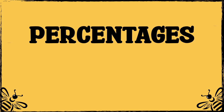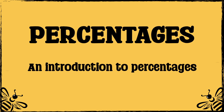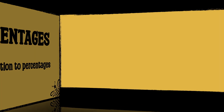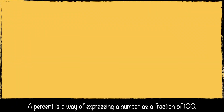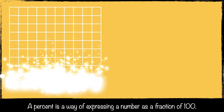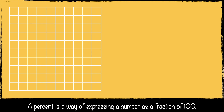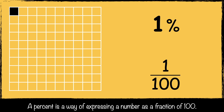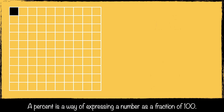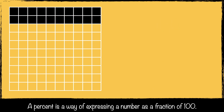This video is an introduction to percentages. A percentage is a way of expressing a number as a fraction of a hundred. The whole is a hundred and the percentage is whatever the part is. So in this example, one part out of a hundred is shaded — 1% of this square is shaded.